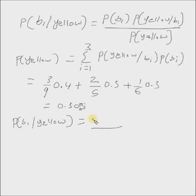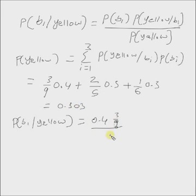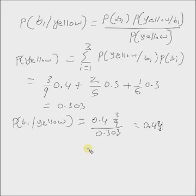Hence the final posterior probability is P(basket 1) = 0.4 multiplied by the probability of yellow from basket 1, which is 3/9, divided by the probability of yellow from any basket, which is 0.303. This fraction comes to 0.44. Therefore, given that the potato is yellow, the probability it came from basket one is 0.44 by Bayes' rule.